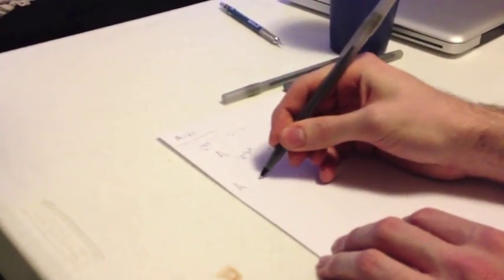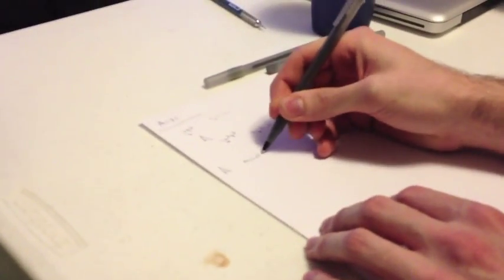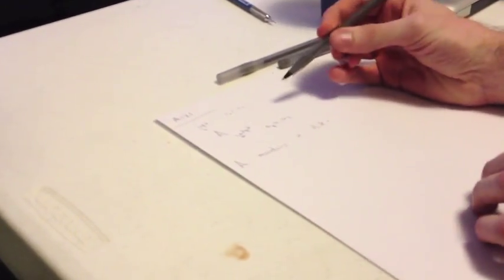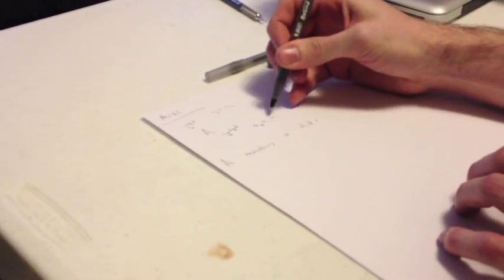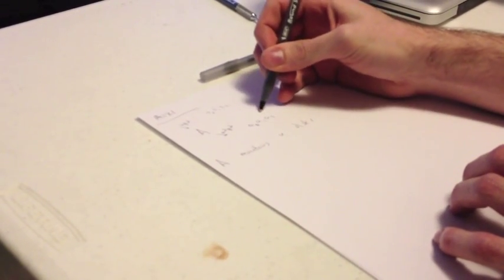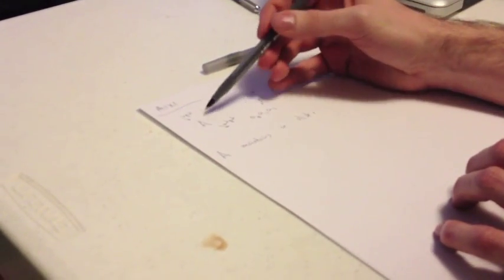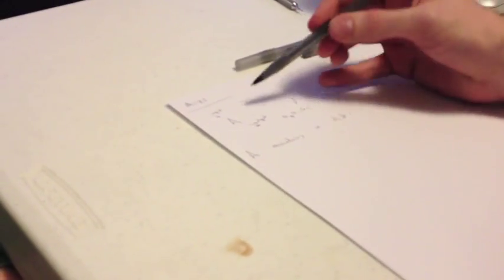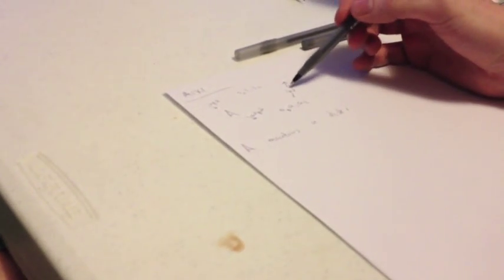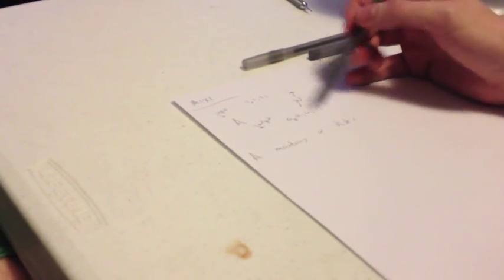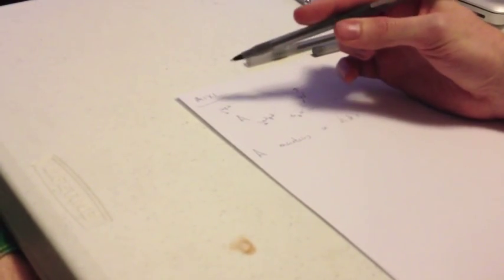The algorithm maintains a distribution over programs that map. It models the world as being another step which takes its actions and then returns the next input. The world produces the first input, then A produces the first output, then the world produces the next input. We can imagine A is a computer, W is everything else in the world — this is the input wire, this is the output wire. Physics does all of this stuff, and it's not really clear how you split things up exactly, which becomes problematic in a bit.